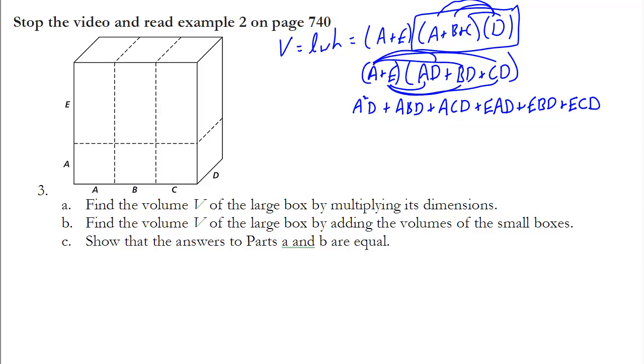And you'll notice that in the end I have a total of six terms, which is what I should have since I took 2 times 3 times 1, which is equal to 6. Now I want to look and see if anything can be combined. And as I look at it, it doesn't look like I can combine any of them. Therefore, this is the volume through multiplication.